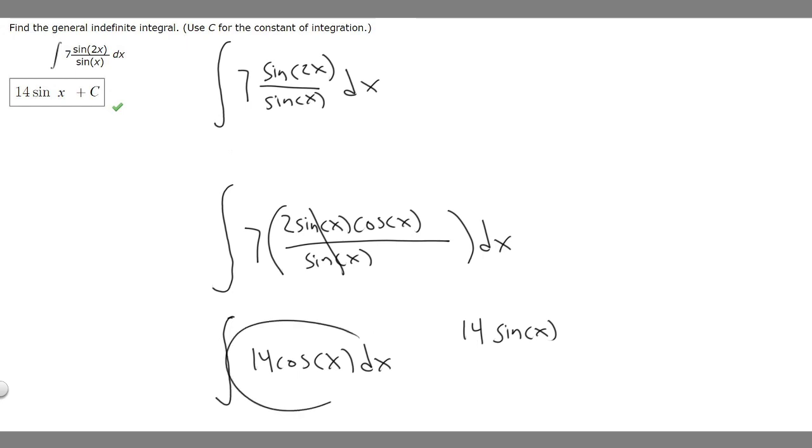Now that we've taken the antiderivative, we always have to add a constant. We're told to use c, so we add plus c. The answer to this problem is 14 times sin(x) plus c.